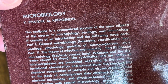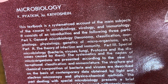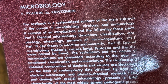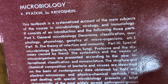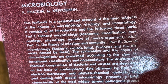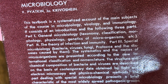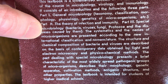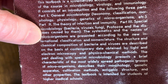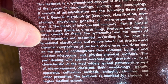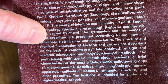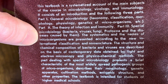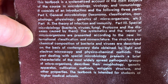It says this textbook is a systemized account of the main subjects of the course in microbiology, virology, and immunology. It consists of an introduction and the following three parts: General Microbiology, Part Two: The Theory of Inflection and Immunity, and Part Three: Special Microbiology.